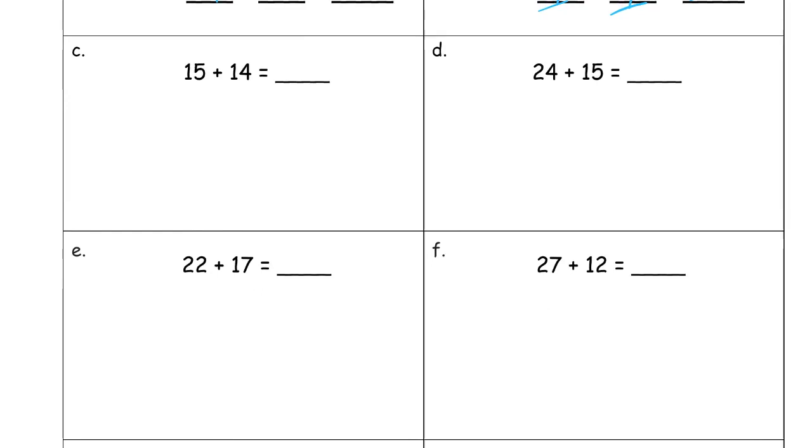15 plus 14. 14 is the smaller number, so I'm gonna split that one up to 10 and 4. I'm gonna start with adding the 15 to the 10, adding the 10 first. 15 plus 10. 25. Then take the 25 and add that remaining part, the 4. 5 plus 4 is 9, so you're gonna have 9 ones, 2 tens. 29.